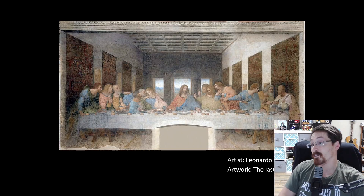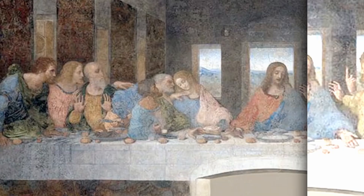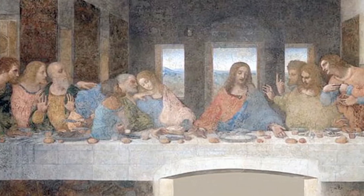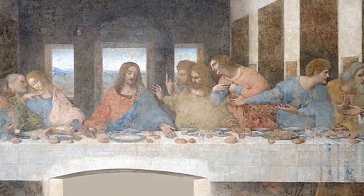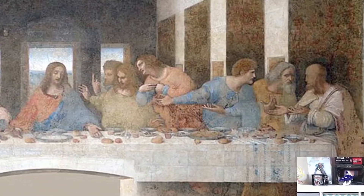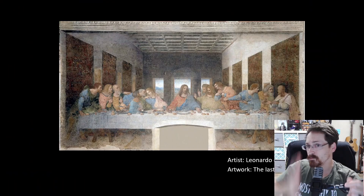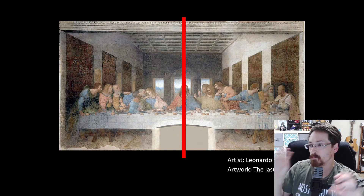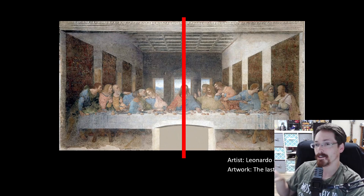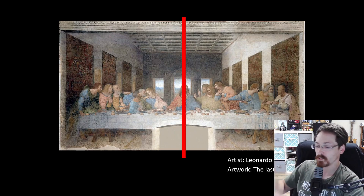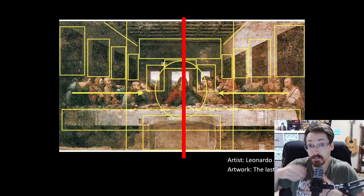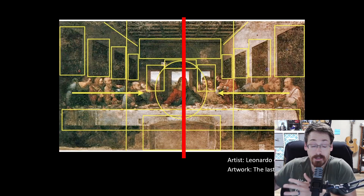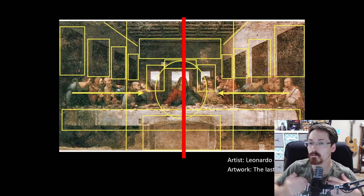If we look at Leonardo da Vinci's Last Supper, you can see that there are different things going on on the left-hand side and the right-hand side. However, if you divide a line down the middle and break everything down into its own little section, you can see that while there are different things going on, they're still balanced based on weight.